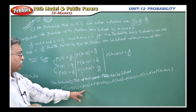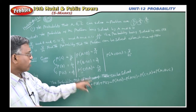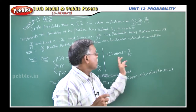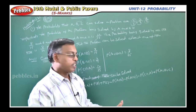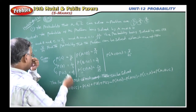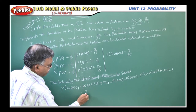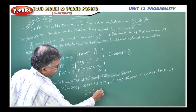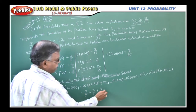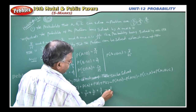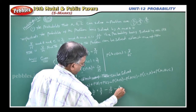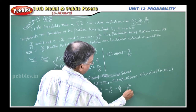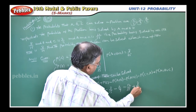All the values are given, so only substitute and simplify. Substituting: 4 by 5 plus 2 by 3 plus 3 by 7 minus 8 by 15 minus 2 by 7 minus 12 by 35 plus 8 by 35.